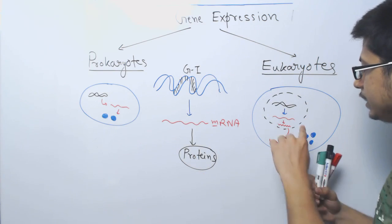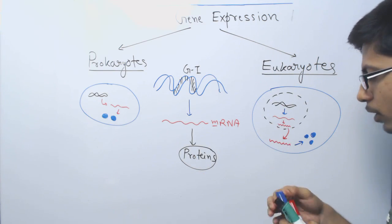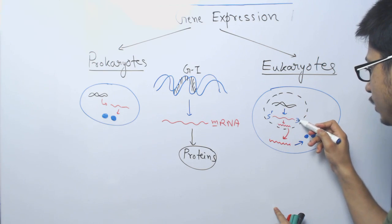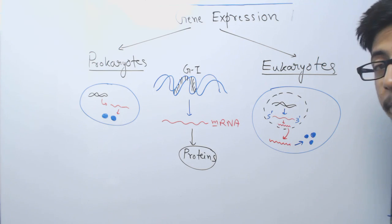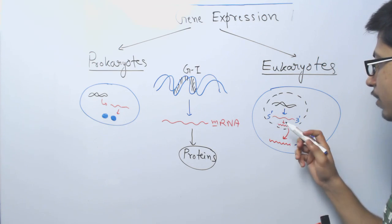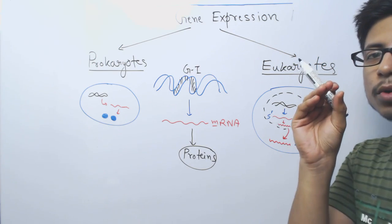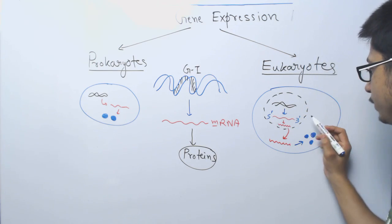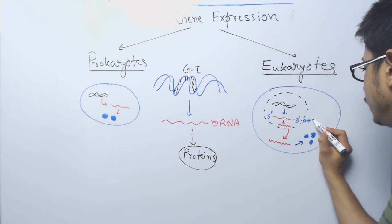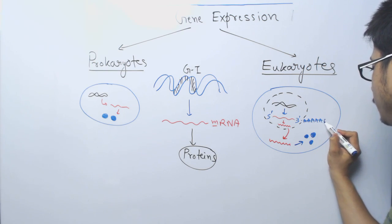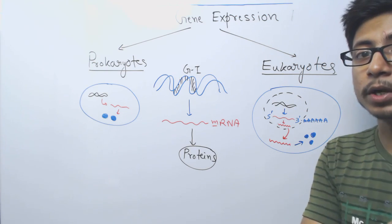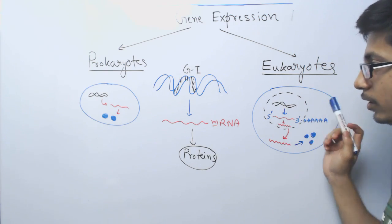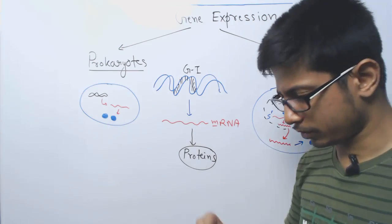In addition to splicing, eukaryotic mRNA also undergoes five-prime and three-prime modifications. The five-prime terminal receives a guanosine residue — this is called five-prime capping. The three-prime terminal is attached with multiple adenine bases — this is called three-prime polyadenylation. These modifications take place in eukaryotes and are not found in prokaryotes.